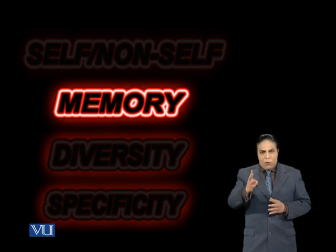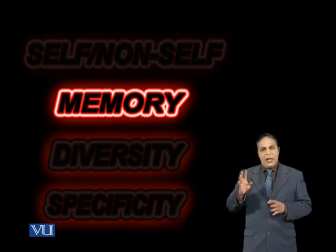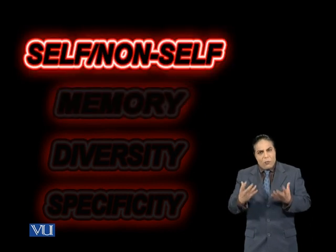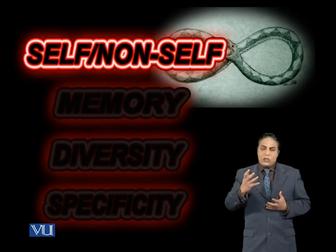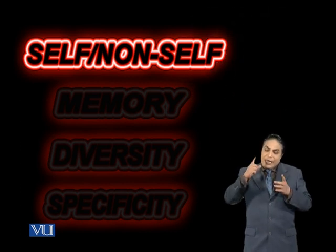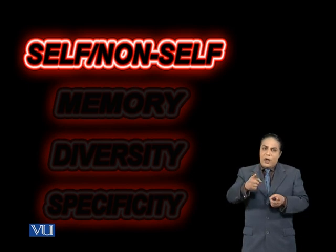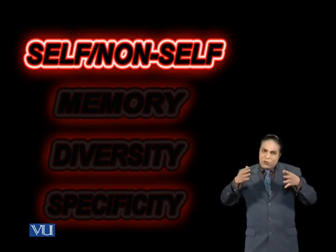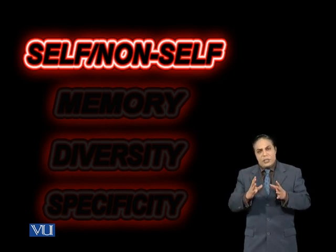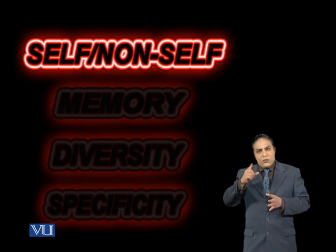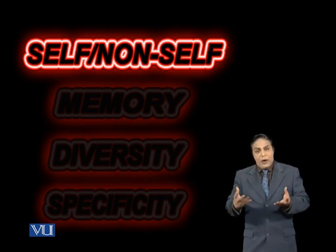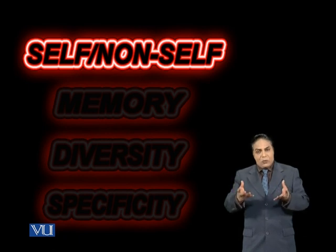The fourth very important feature is that our immune system is able to recognize self from non-self. It would be catastrophic if our immune system — which, make no mistake, is geared toward destruction — focused that destructive force on our own body. So our immune system must have the ability to recognize our body from foreign entities that can cause potential harm.